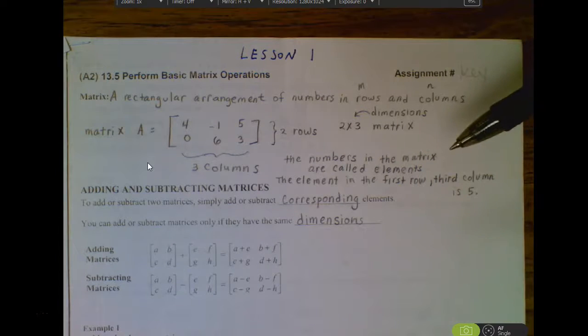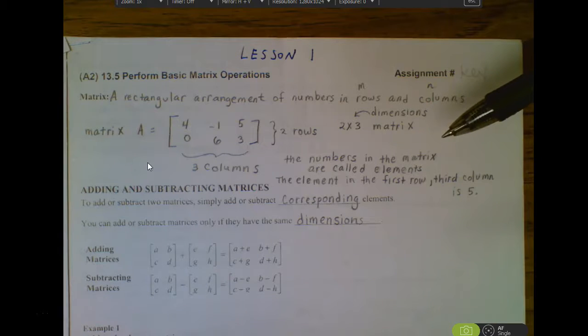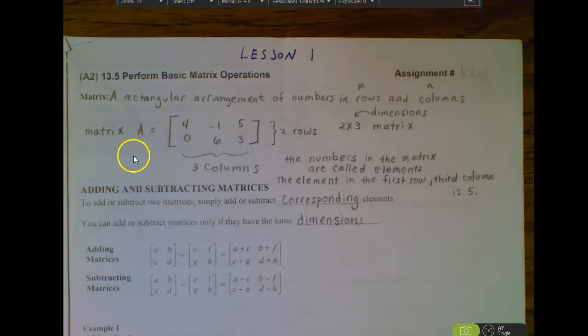Whenever we identify the dimensions of a matrix, we always do rows by columns. So we would call this a 2 by 3 matrix. Each number within the matrix we call an element. So this one has six elements total. The dimensions were 2 by 3.